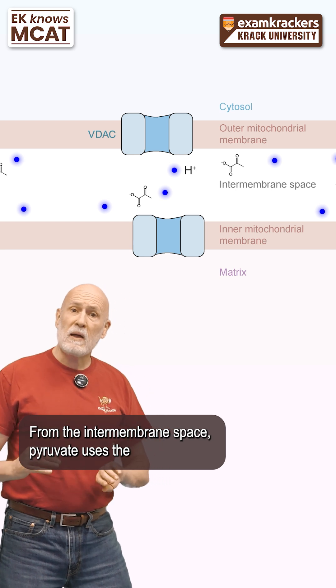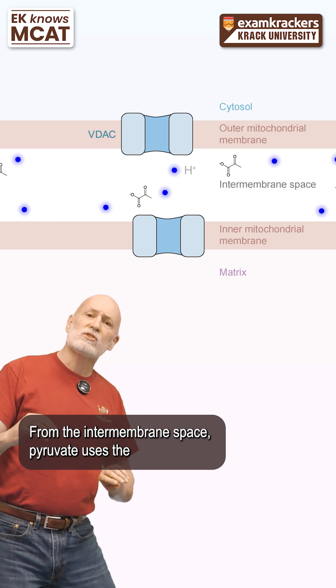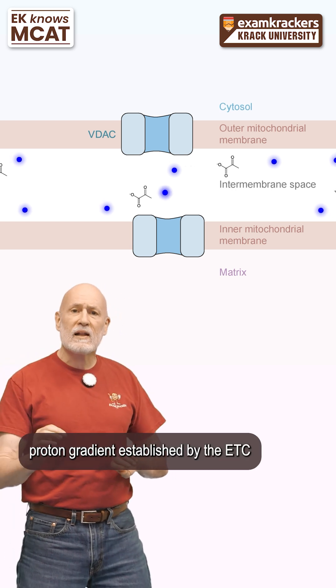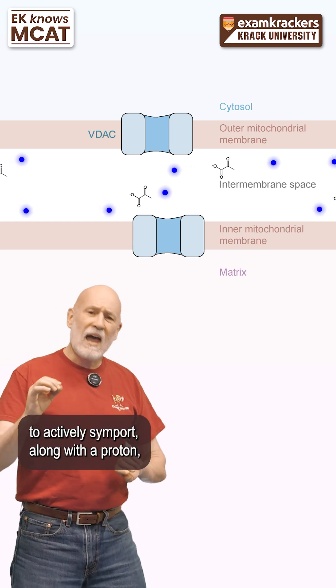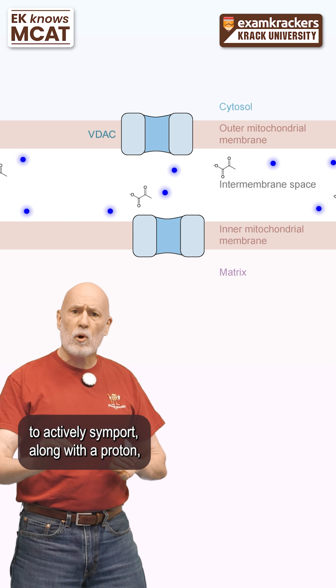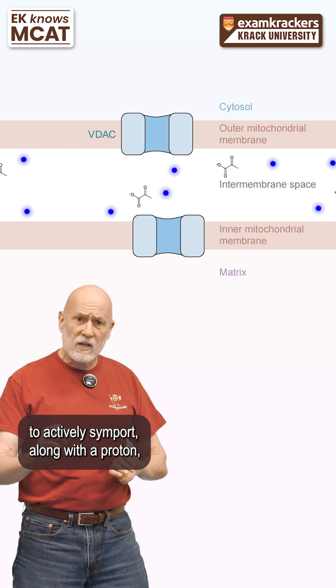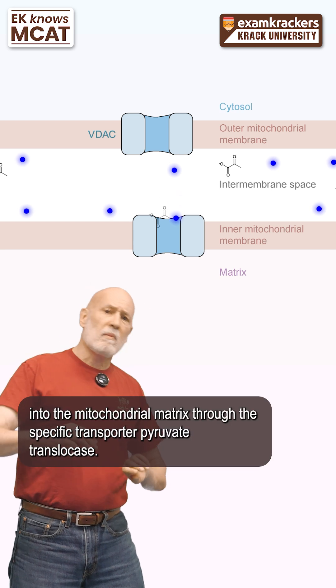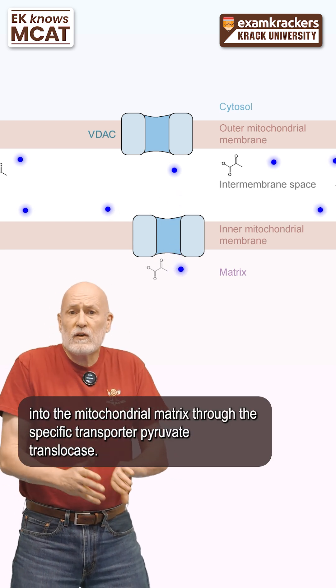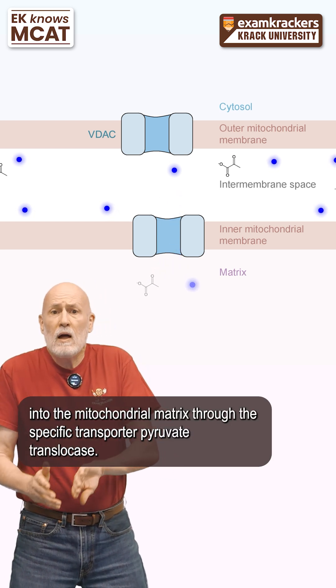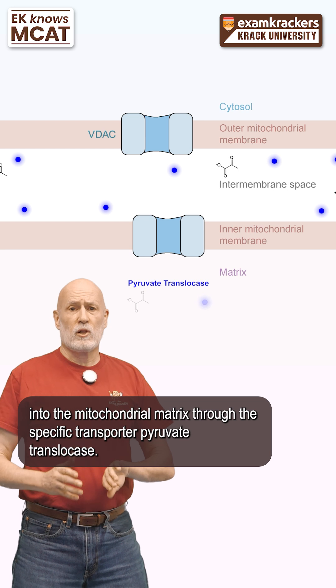From the intermembrane space, pyruvate uses the proton gradient established by the ETC to actively symport along with the proton into the mitochondrial matrix through the specific transporter pyruvate translocase.